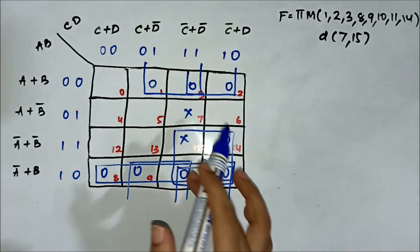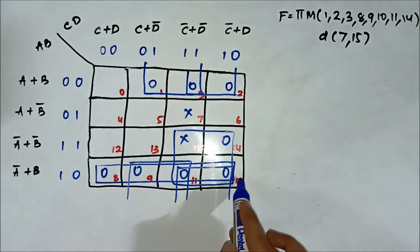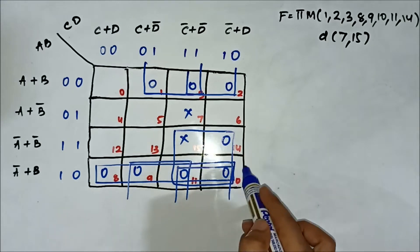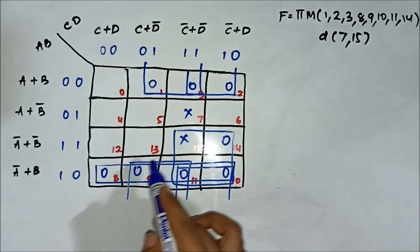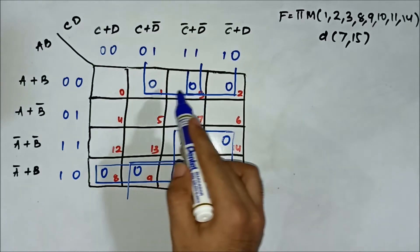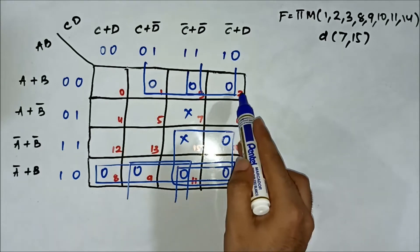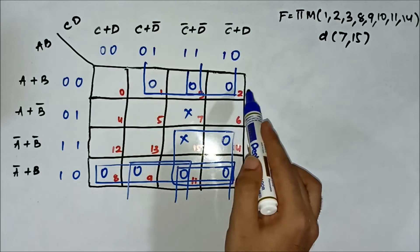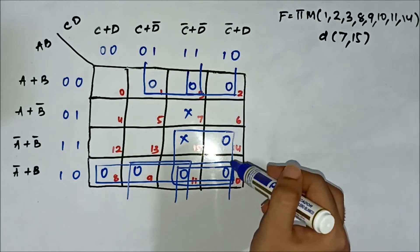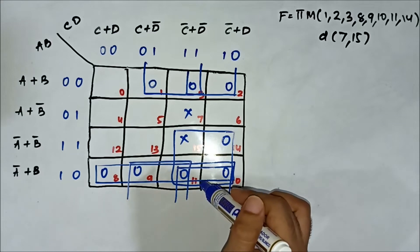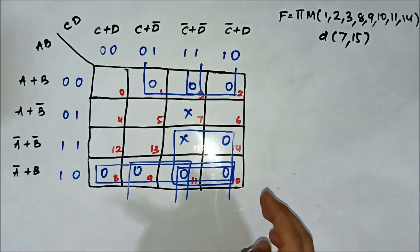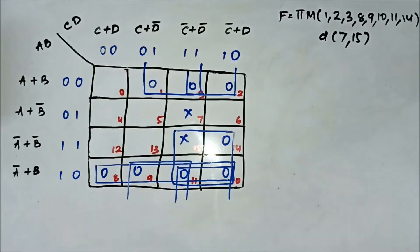Pay attention to how the groups were formed. Quad 1 involves cells 8, 9, 11, 10. Quad 2 involves cells 10, 11, 14, 15. Quad 3 involves cells 1, 3, 9, 11. Quad 4 involves cells 2, 3, 10, 11. There are 4 quads total.